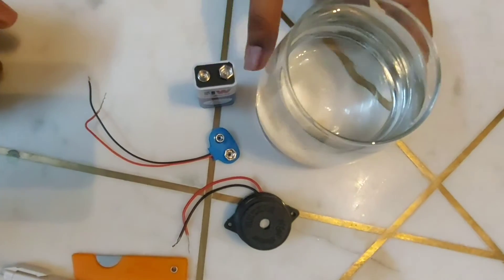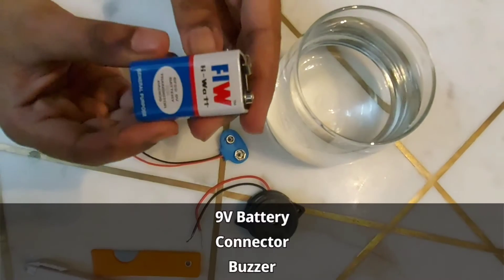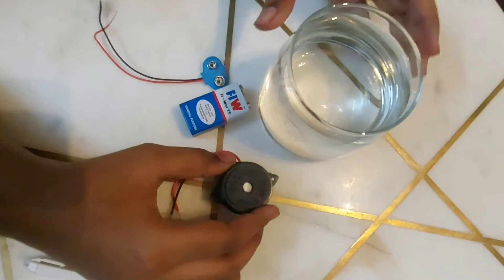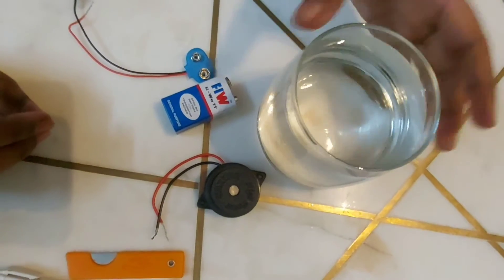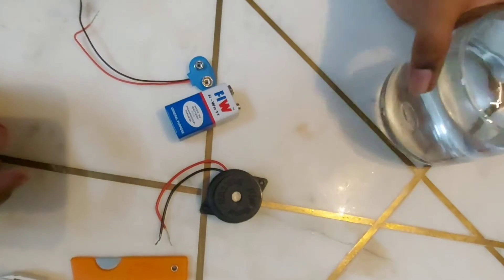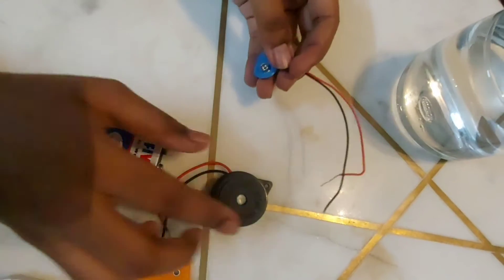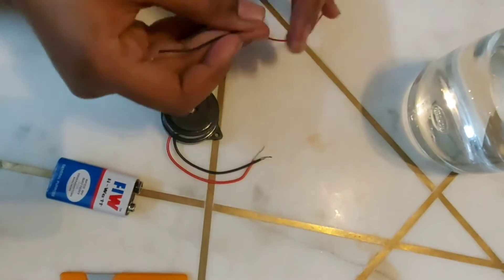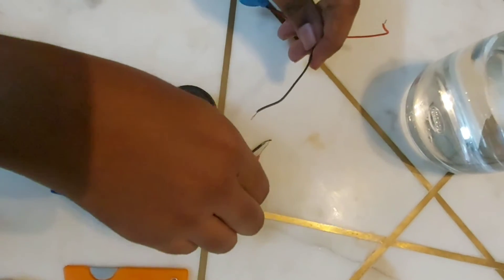The components required are a nine volt battery, a buzzer, and a glass of water, but the water will be required only at the last. First, we have to connect the battery and the buzzer. The black wire from the battery and the black wire from the buzzer has to be connected.